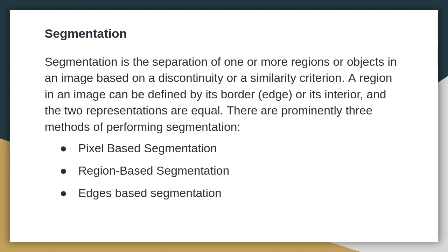A region in an image can be defined by its border, edge, or its interior, and the two representations are equal. The region can be defined by its border edge or its interior. There are three prominent methods to perform segmentation.